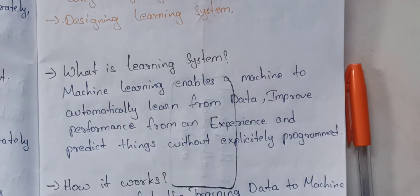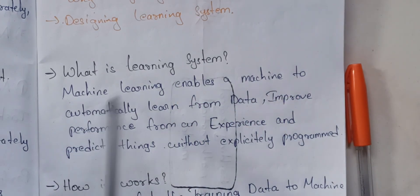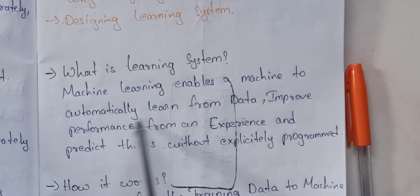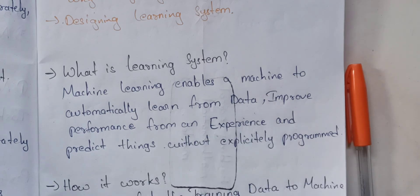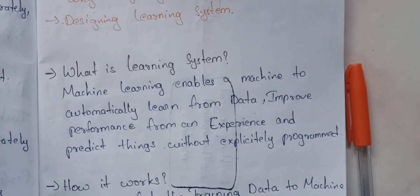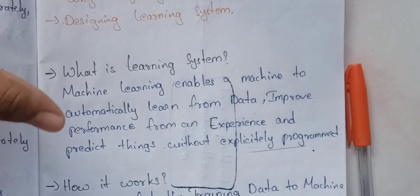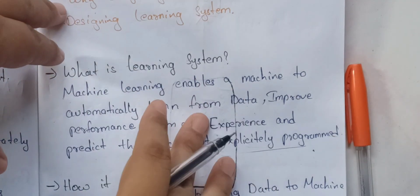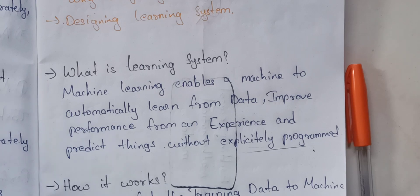What is a learning system? Machine learning enables a machine to learn automatically from data, to improve performance from experience, and predict things without being explicitly programmed. It is a machine that has the capability to learn automatically from data and gain experience.